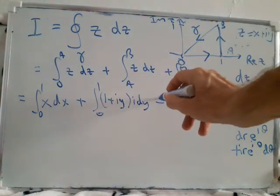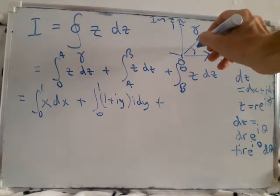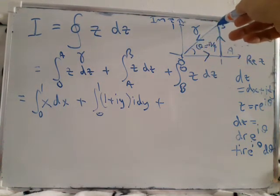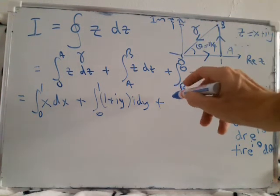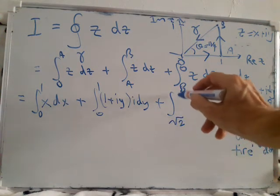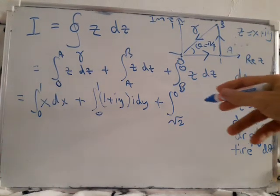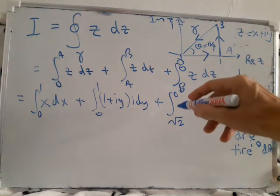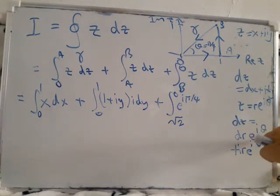Finally, our last integral along here. Now we have theta is constant, constant π/4. And we've got r changing. The distance here is √2 to 0. We're going to use this form. Theta's not changing, so we've just got dr times e^(iθ). And theta is π/4, so we've got e^(iπ/4) dr.